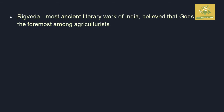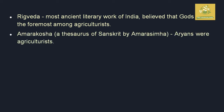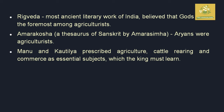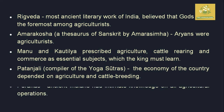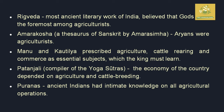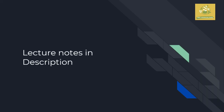The Rig Veda is the most ancient literary work made in India and holds that gods were the founders of agriculture in our land. Amarkosha is a thesaurus of Sanskrit made by Amarasimha. Manu and Kautilya prescribed agriculture as an essential subject which even the king must learn. Patanjali, the compiler of the Yoga Sutra, noted that the economic country was dependent on agriculture as well as cattle breeding. The Puranas contain ancient Indian knowledge of agricultural operations.